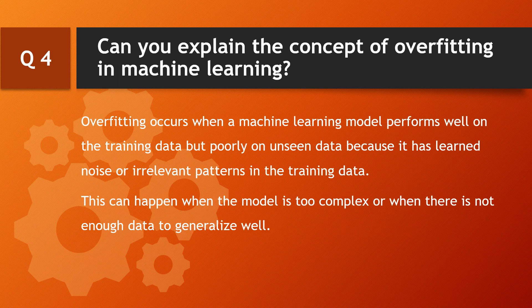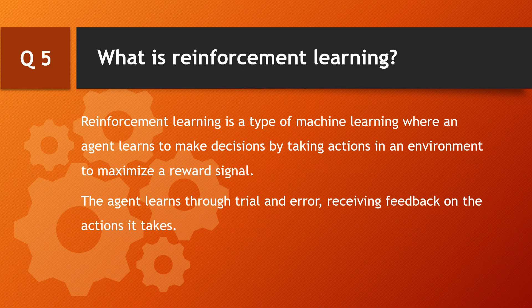Question: can you explain the concept of overfitting in machine learning? Overfitting occurs when a machine learning model performs well on the training data but poorly on unseen data, because it has learned noise or irrelevant patterns in the training data. This can happen when the model is too complex or when there is not enough data to generalize it well.